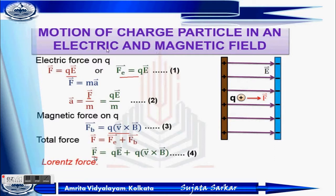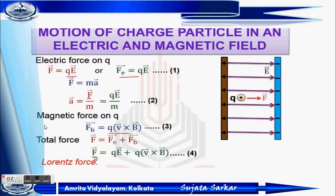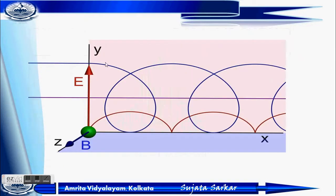The next topic is motion of a charged particle in combined electric and magnetic fields. The electric force is F = QE, and since F = MA, the acceleration A = QE/M. The magnetic force is F_B = QV cross B. The total force, called the Lorentz force, is the sum of magnetic and electric forces: F = QE + QV cross B.